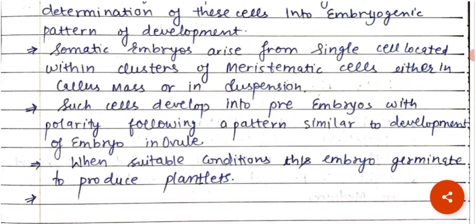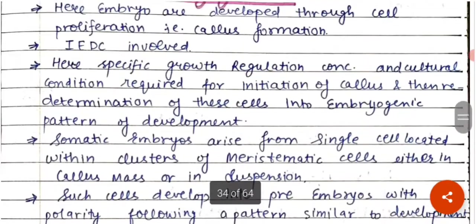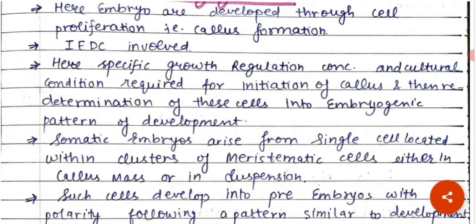We have IEDC — induced embryogenic determined cells. In the majority of cases, we have embryogenesis by the indirect method. In majority of cases, somatic embryogenesis requires specific growth regulators and specific conditions for callus initiation.